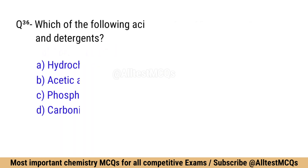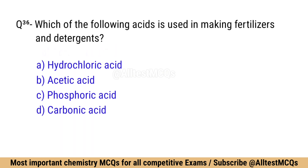Question number 36: Which of the following acids is used in making fertilizers and detergents? Correct option is C: Phosphoric acid.